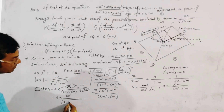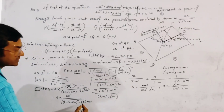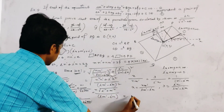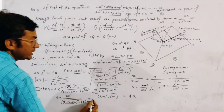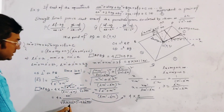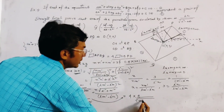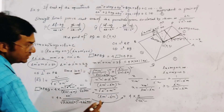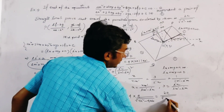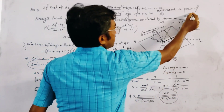Substituting, the area of the parallelogram APBQ = 4c / 2√(h² - ab) = 2c / √(h² - ab). This is the required result for the area of the parallelogram enclosed by the two pairs of parallel straight lines.